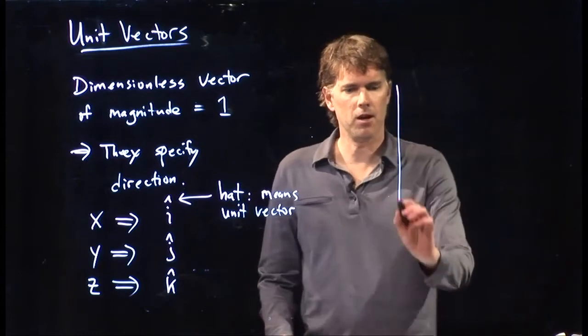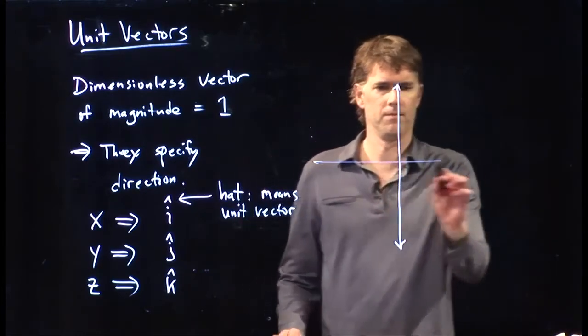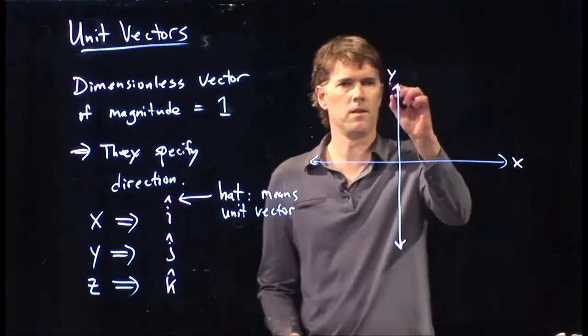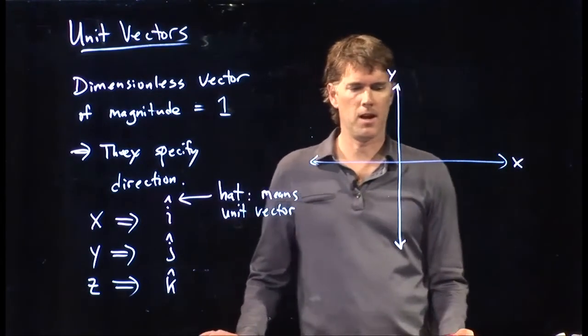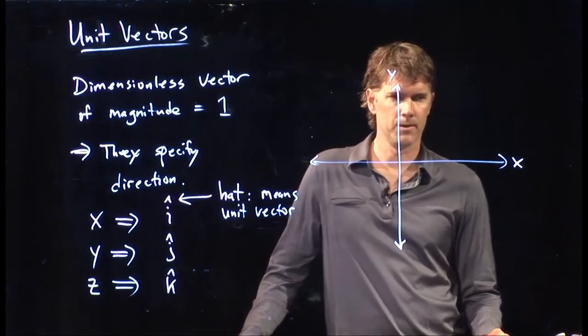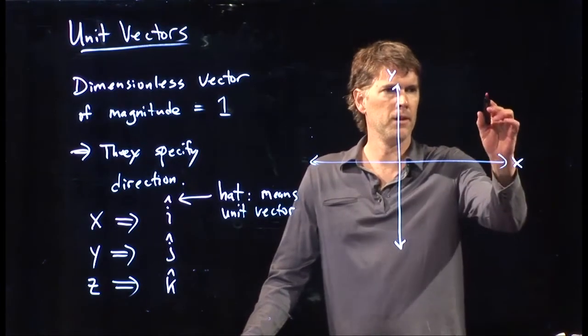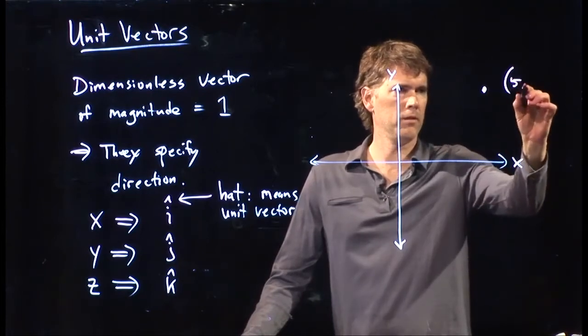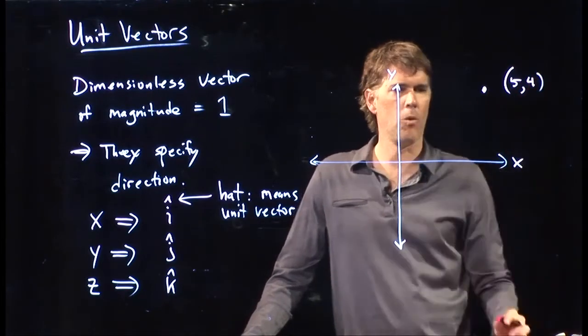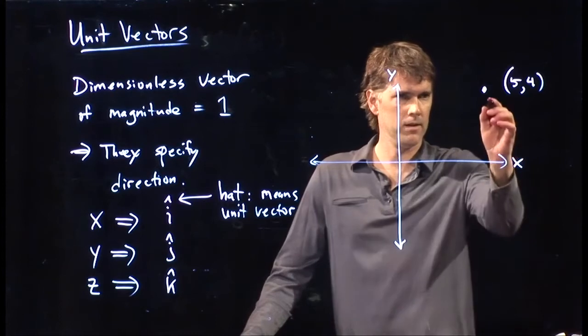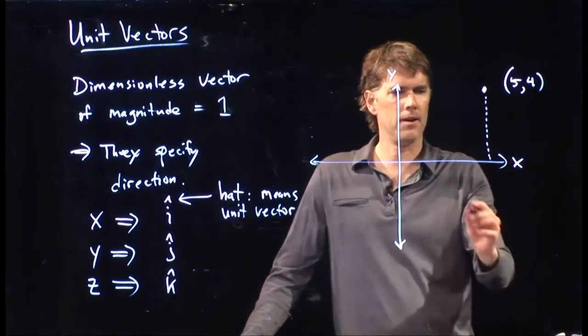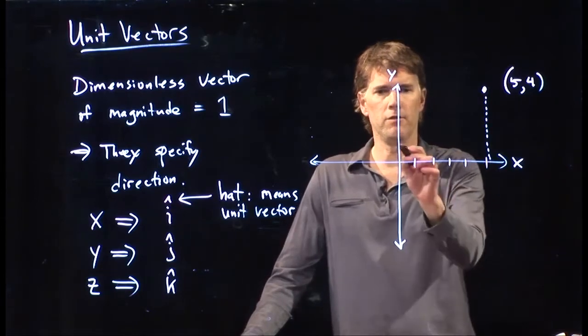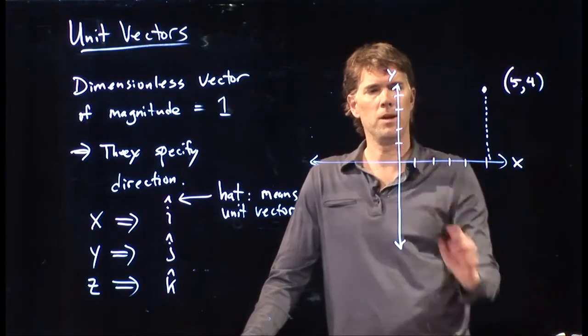So let's draw a coordinate system. And let's try the following. I'm going to give you a point right here. Let's say that that is, it is 5 out in the x direction. 1, 2, 3, 4, 5. It is 4 up in the y direction.